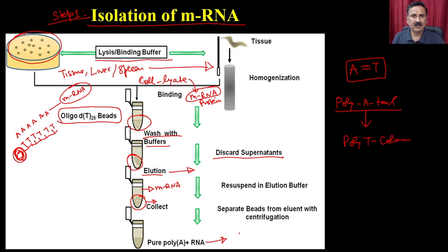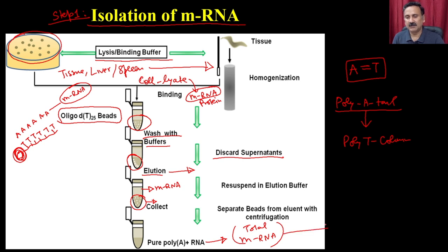Most messenger RNAs carry the poly-A tail. Now you have isolated the total messenger RNA from the cell and will use it for synthesis of the cDNA — the complementary DNA of these messenger RNAs.